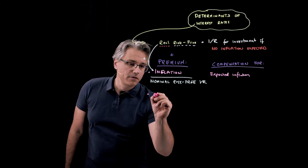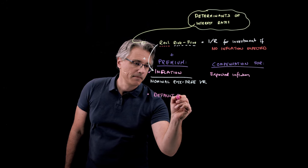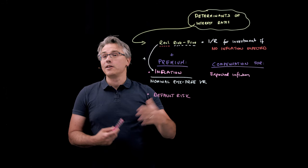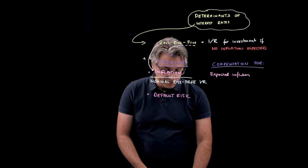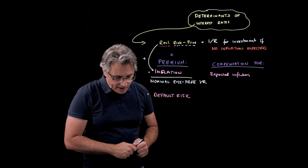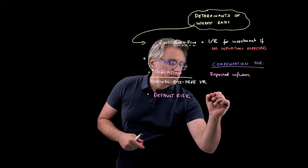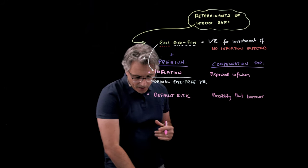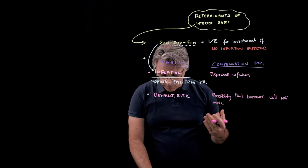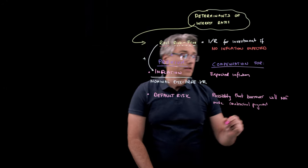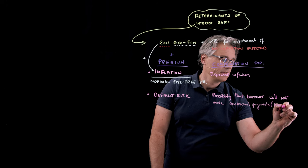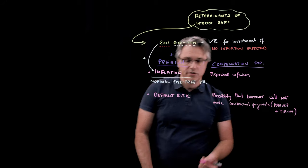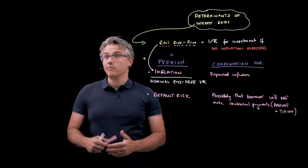The next premium is the default risk premium. Default is a term we typically associate with bonds — it represents a situation in which the issuer of bonds, the borrower of money, fails to make a payment in full or on time. This is compensation for the possibility that the borrower will not make the contractual, promised payments — and this is just as much about the amount of those payments as it is about the timing. Timing is just as important; it's no good if somebody pays us but they're several months or even years late.